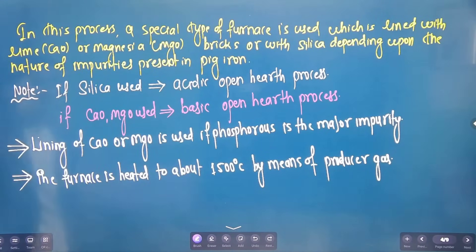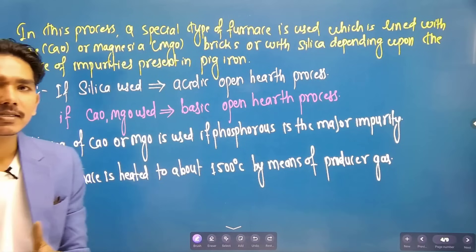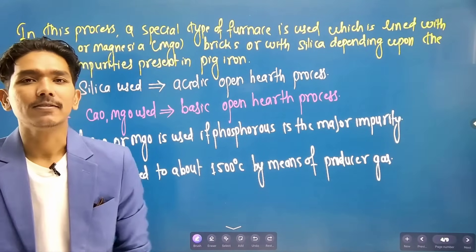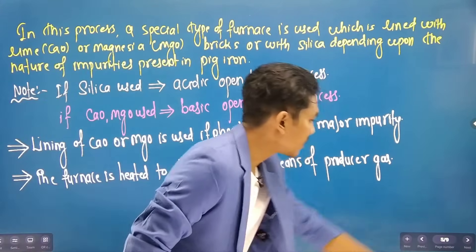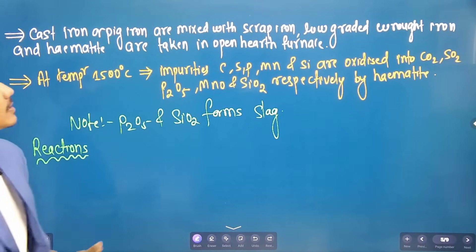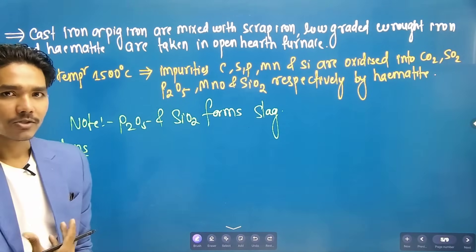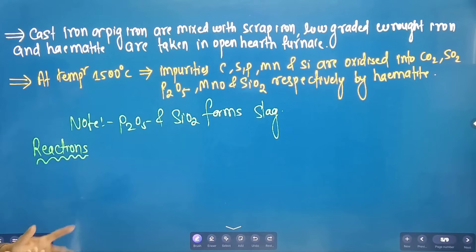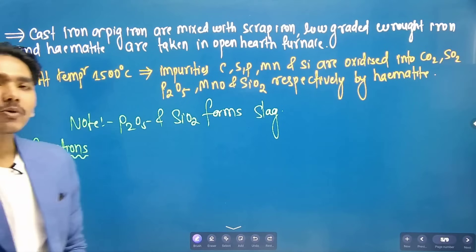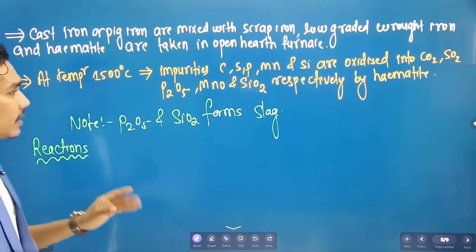We can see that in the furnace, we can heat it to 1500 degrees Celsius continuously. We can mix cast iron and pig iron in it. We can also mix scrap iron and low-grade iron. We do this because we need to reduce the carbon content. At 1500 degrees Celsius, we can see the impurities.